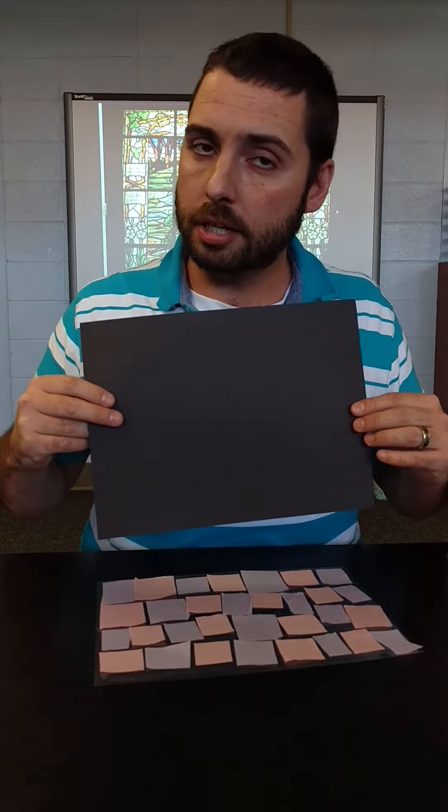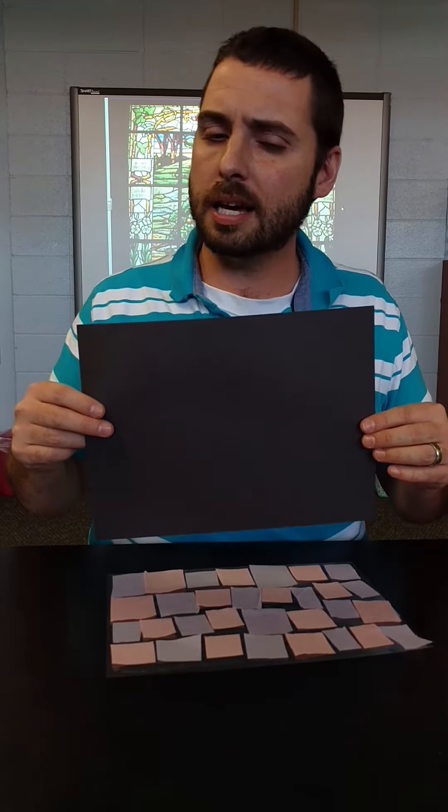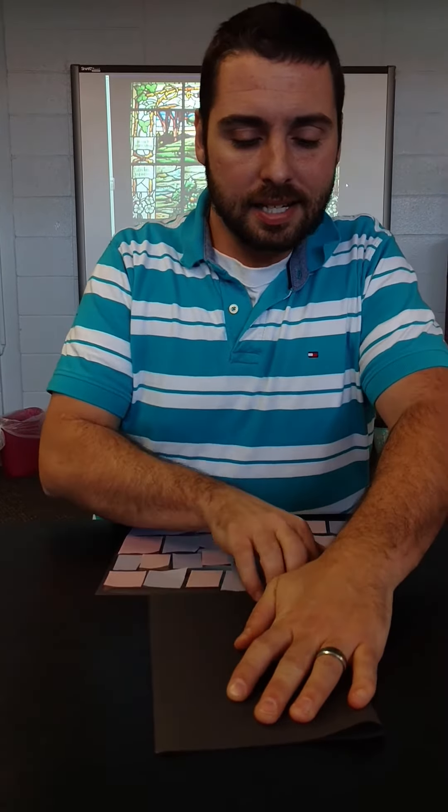Now, the third type of object is an opaque object. That is construction paper. I'm going to take that construction paper, and I'm going to fold it, nice and neat.